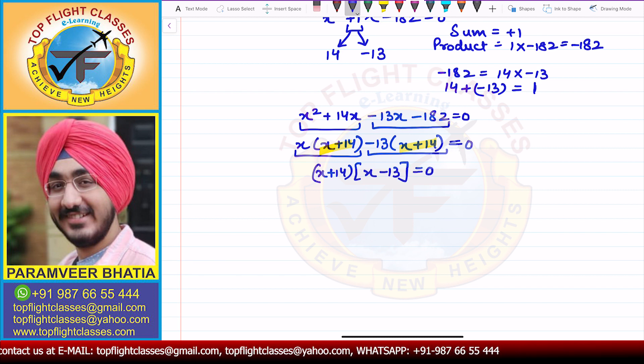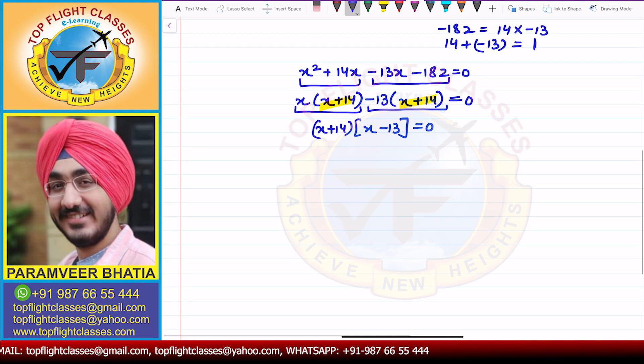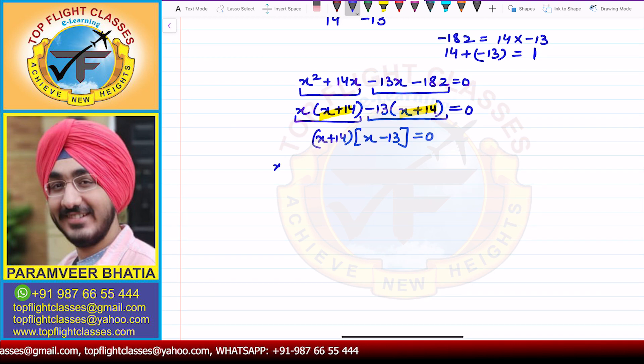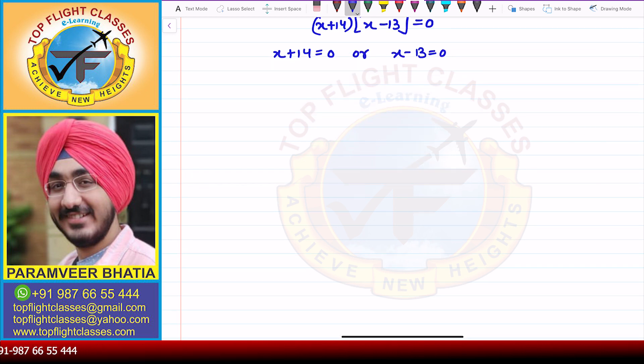Now I have two factors for the equation given to me. So in these factors, I can get the two roots. So I will get x plus 14 is equal to 0 or x minus 13 is equal to 0. Here, what I will get is x is equal to minus 14 or x is equal to 13.